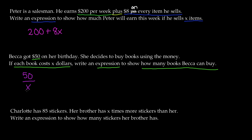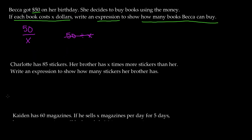When it comes to division, you don't necessarily write 50 divided by x with the division symbol. In algebra, most likely you'll see it written as a fraction: 50 over x. And that's it for this word problem.